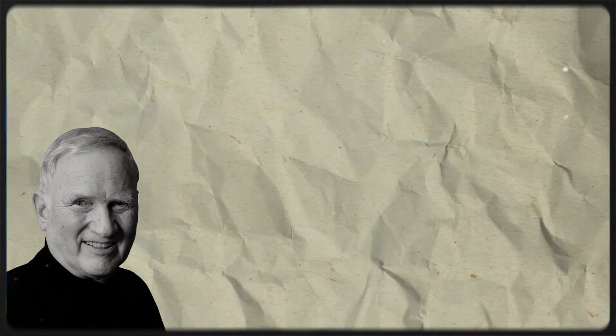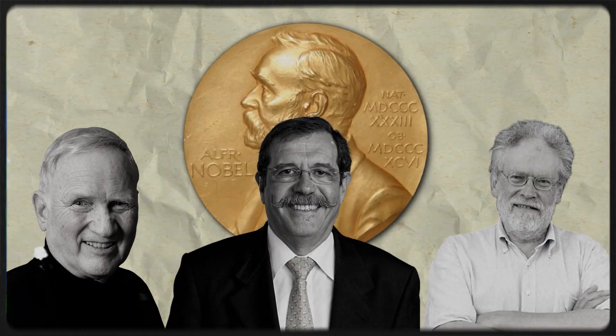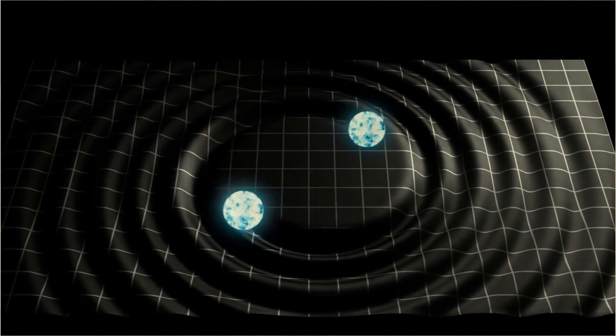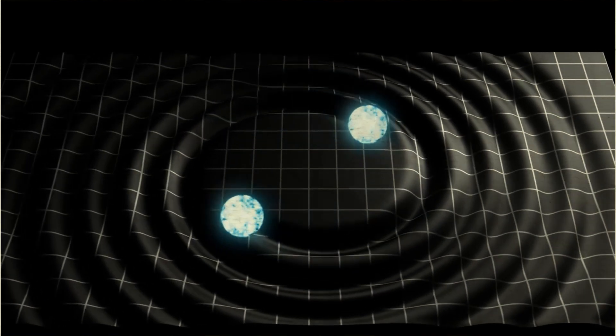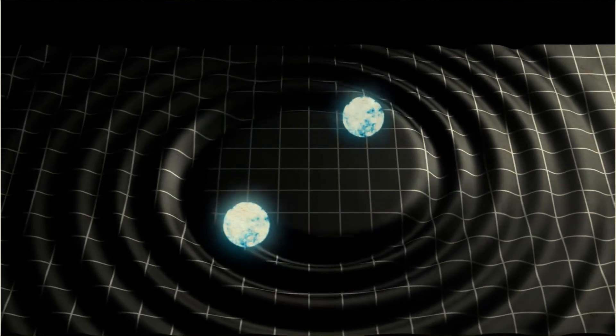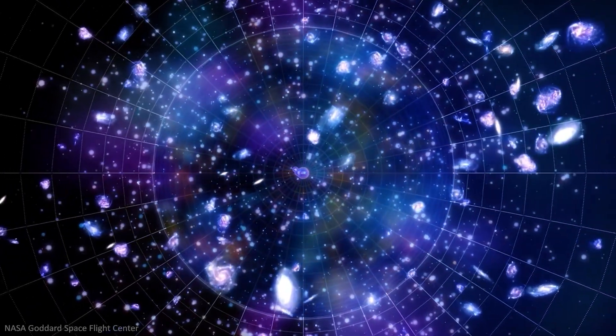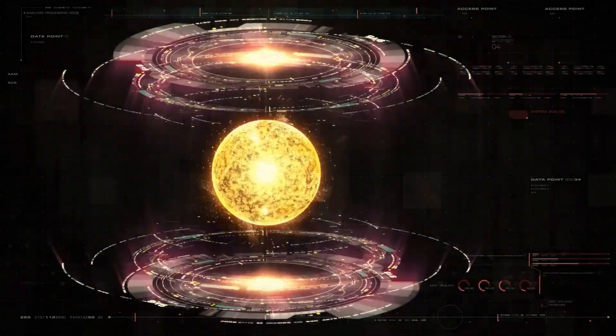Einstein believed that quantum physics was incomplete and that we'll someday find out the missing variables that are connecting these entangled particles. However, three scientists—John Clauser, Alan Aspect, and Anton Zeilinger—in 2022 won the Nobel Prize for proving that these particles don't exist. They reached the conclusion that an entangled particle doesn't have any properties unless it is measured and thus cannot be known or guessed by any means.